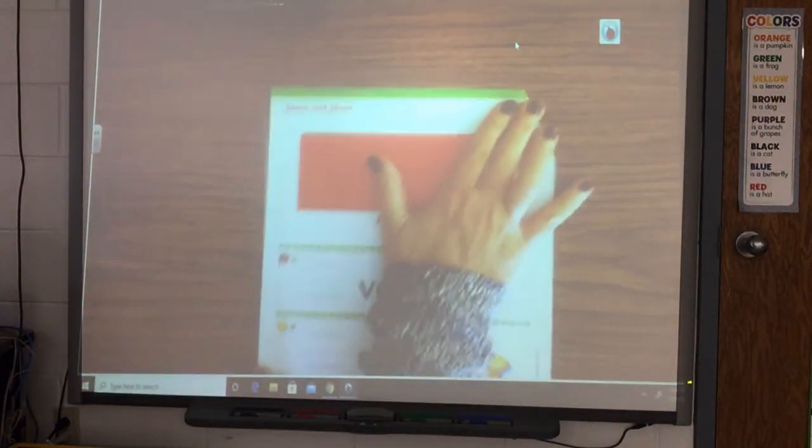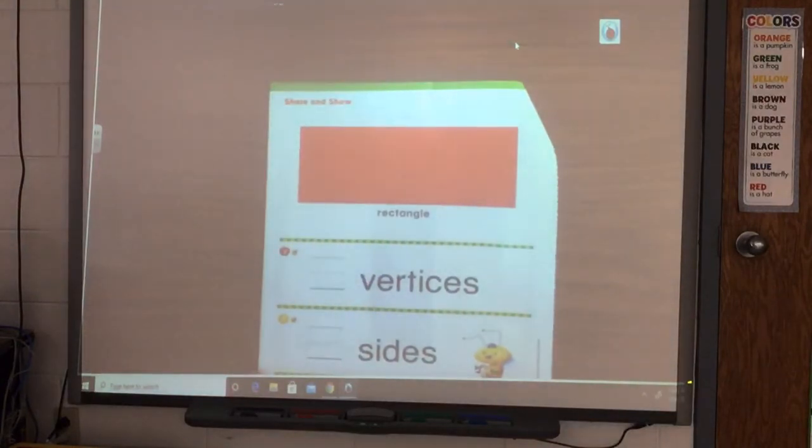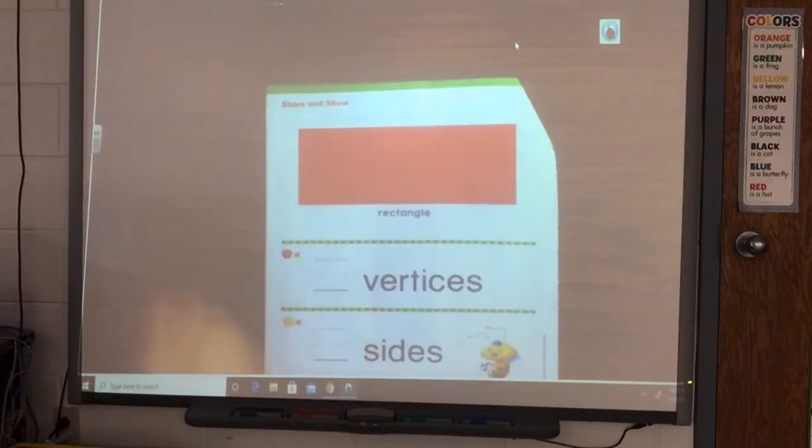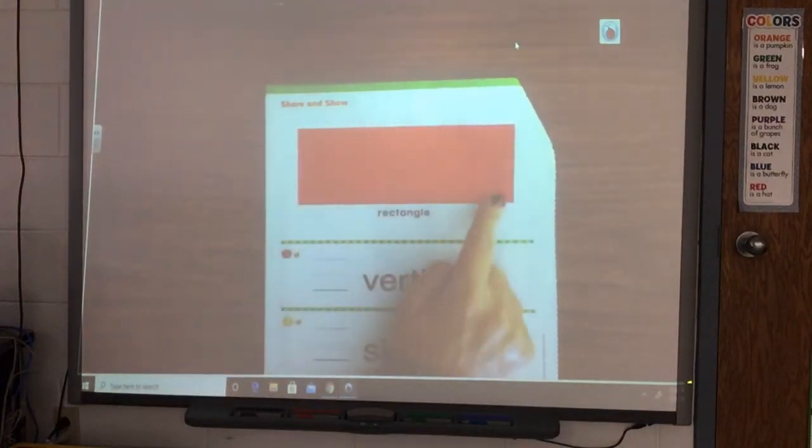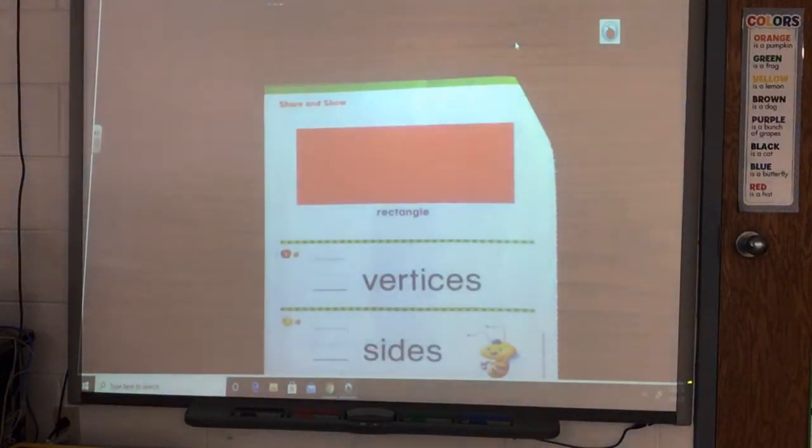All right, when you are doing your work today, when you turn the page, you've got a big large rectangle in the top of the page. Then when you put your finger by the red apple, they want to know how many vertices that rectangle has. So we can count them: one, two, three, four. Write a four on that line, down and over, down once more.